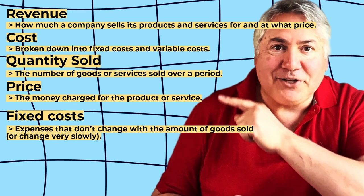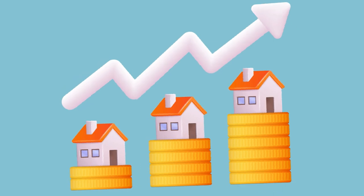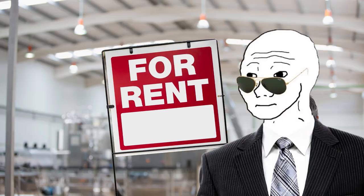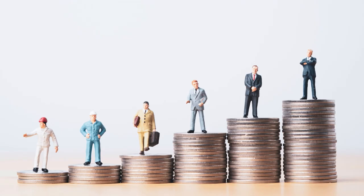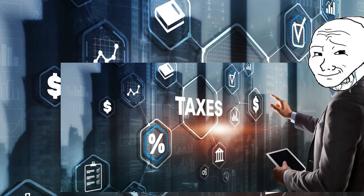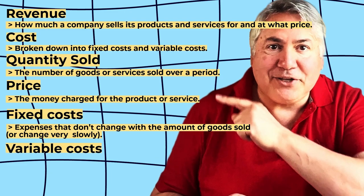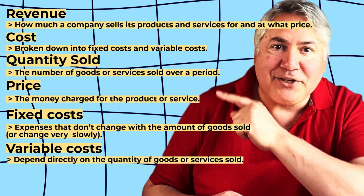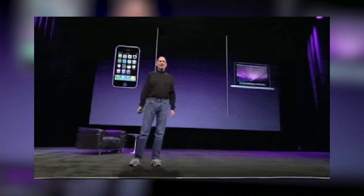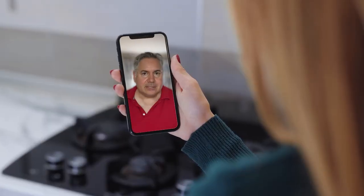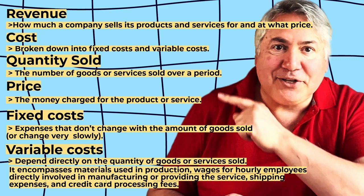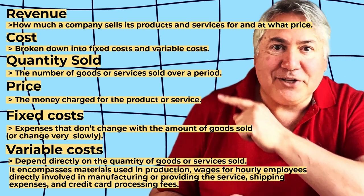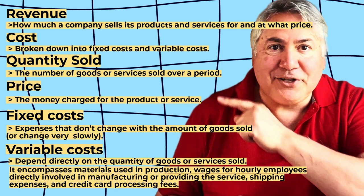Fixed costs are expenses that don't change with the amount of goods sold, or change very slowly. These include property costs like rent for offices, factories, warehouses, or retail space; depreciation of equipment; salaries for employees and management; and property taxes. Variable costs, on the other hand, depend directly on the quantity of goods or services sold. For instance, if you sell more smartphones, you'll need more components like screens and batteries. Variable costs encompass materials, wages for hourly employees, shipping expenses, and credit card processing fees.